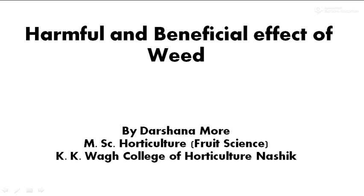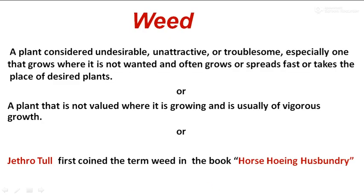A weed means an unwanted plant with no economic value — a plant considered undesirable, unattractive, or troublesome, especially one that grows where it is not wanted and often grows or spreads fast or takes the place of desired plants. A plant not valued where it is growing, usually of vigorous growth. There are about 30,000 species around the world, of which about 18,000 cause serious losses in agricultural production.